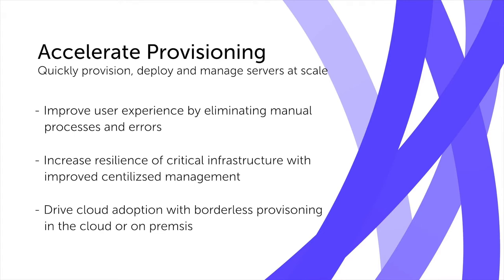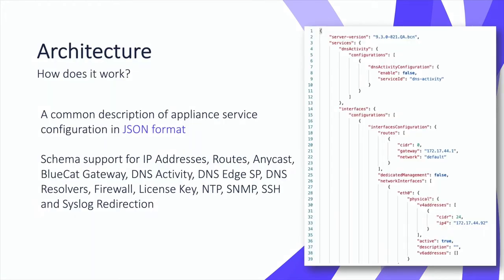Let's take a look at the architecture we've added in Integrity 9.3 to support our new provisioning functionality. The first critical part of the solution is the new common description of an appliance's service configuration. This JSON schema supports the setting of many common services such as SNMP and NTP for appliances, but it also supports new functionality like Gateway as a Service, Service Point on BDS, and DNS Activity functions recently added in Integrity 9.3. As we add new capabilities to our solution on the roadmap, we'll continue to ensure these are covered in this same JSON schema in later releases.